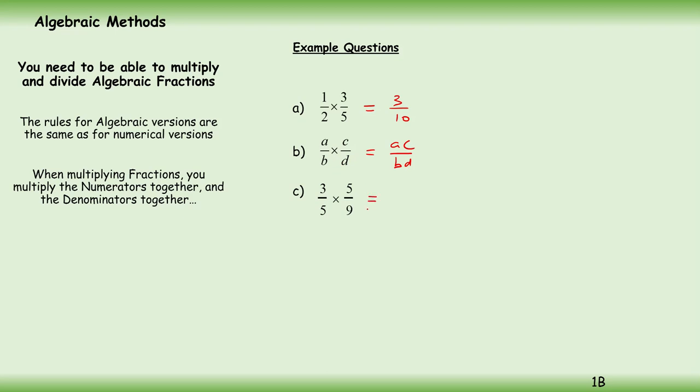In this one, slightly different—we get some cancelling. Three goes into itself one time, and three goes into nine three times. Five goes into itself one time. So they cancel: one times one on the top divided by one times three. Where we can cancel, we do it because we simplify before we multiply—much easier.